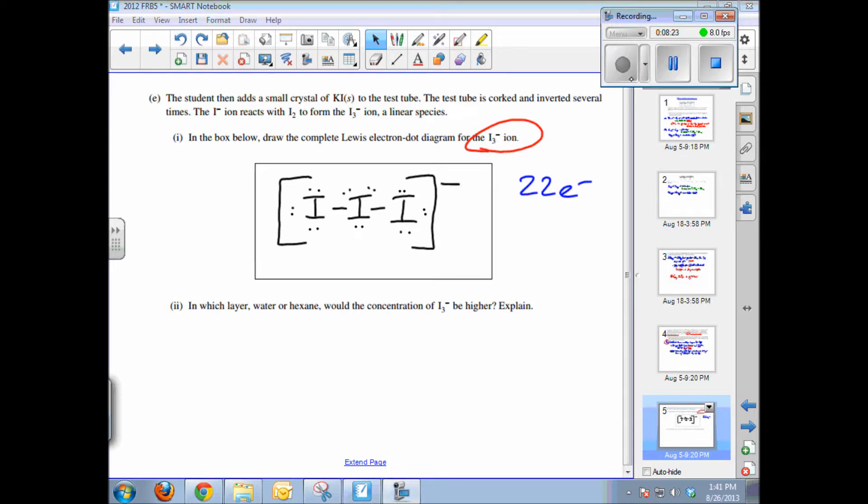The final subpart of this question asks: In which layer, water or hexane, would the concentration of I3 minus ion be higher? And of course, it's higher in the water layer because water is a polar solvent and there are strong ion-dipole attractions.